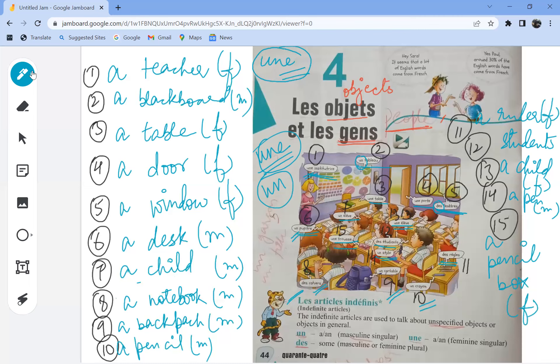Let's go through these nouns once again. The first one is une institutrice, a teacher. Un tableau, a blackboard. Une table is a table. Une porte is a door. Des fenêtres, or une fenêtre, is a window.